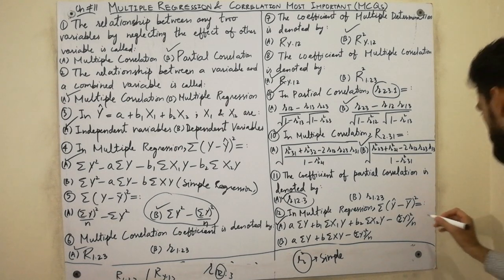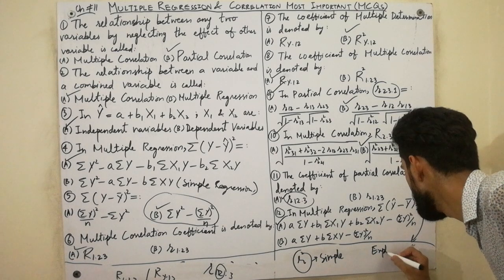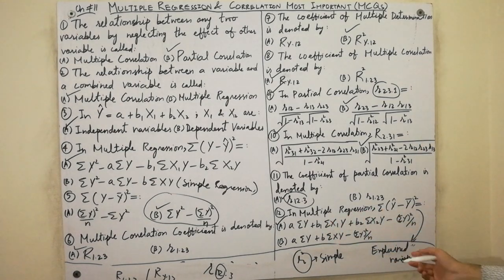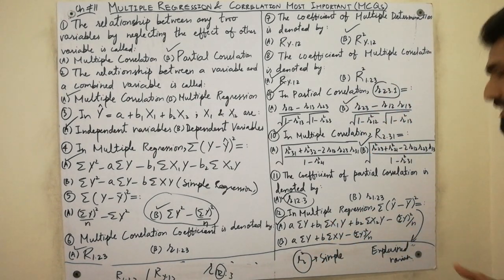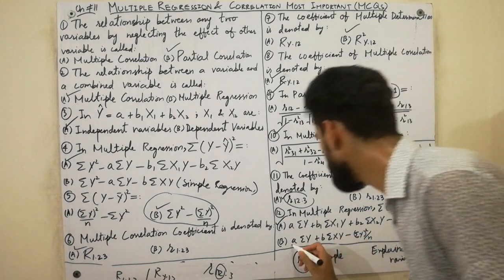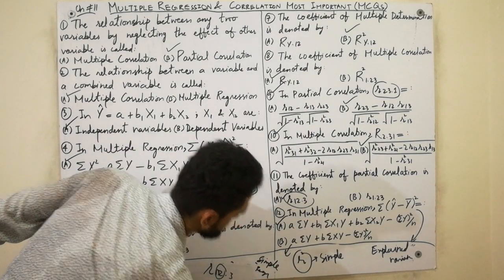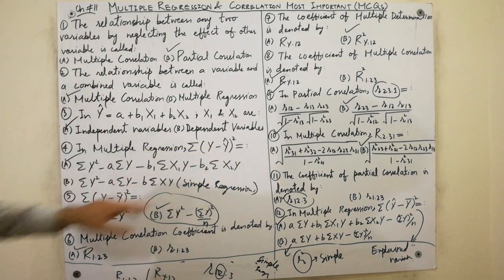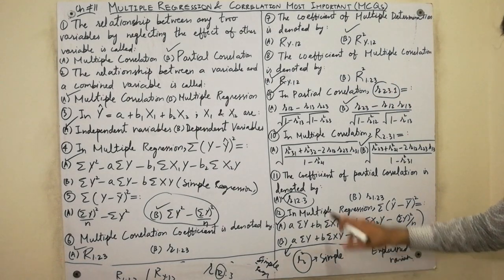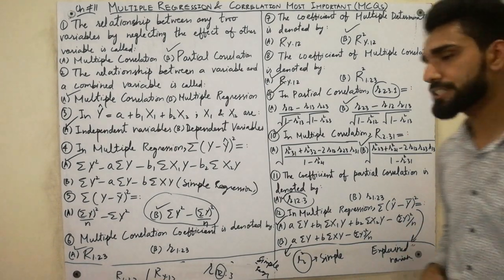The relationship between any two variables is called explained variation. In simple regression, summation y·y-hat equals a·summation y plus b·summation x·y. In multiple regression, the corresponding formula expands accordingly. Must remember the distinction between these formulas in simple versus multiple regression.